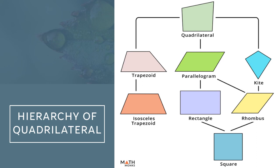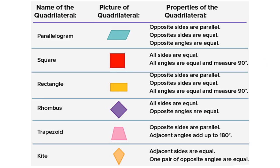Before anything else, you need to recall first the properties that we have for each quadrilateral, so that later on, if you encounter quadrilaterals in coordinate proofs, it would be easier for you to apply the necessary formulas for whatever concept or properties you are going to prove. For example, you should know that if we are going to prove that the given quadrilateral is a square, you are going to look into these properties wherein all the sides are equal and all angles are equal and measure 90 degrees. You need to be particular with the properties of each quadrilateral.